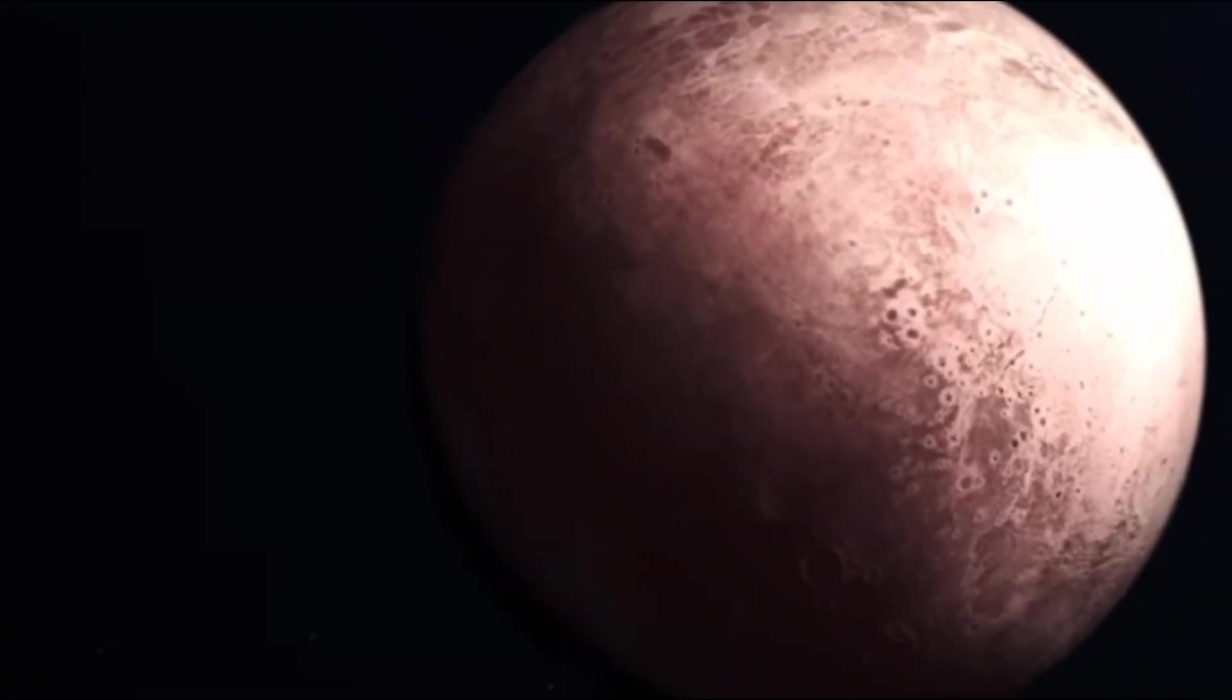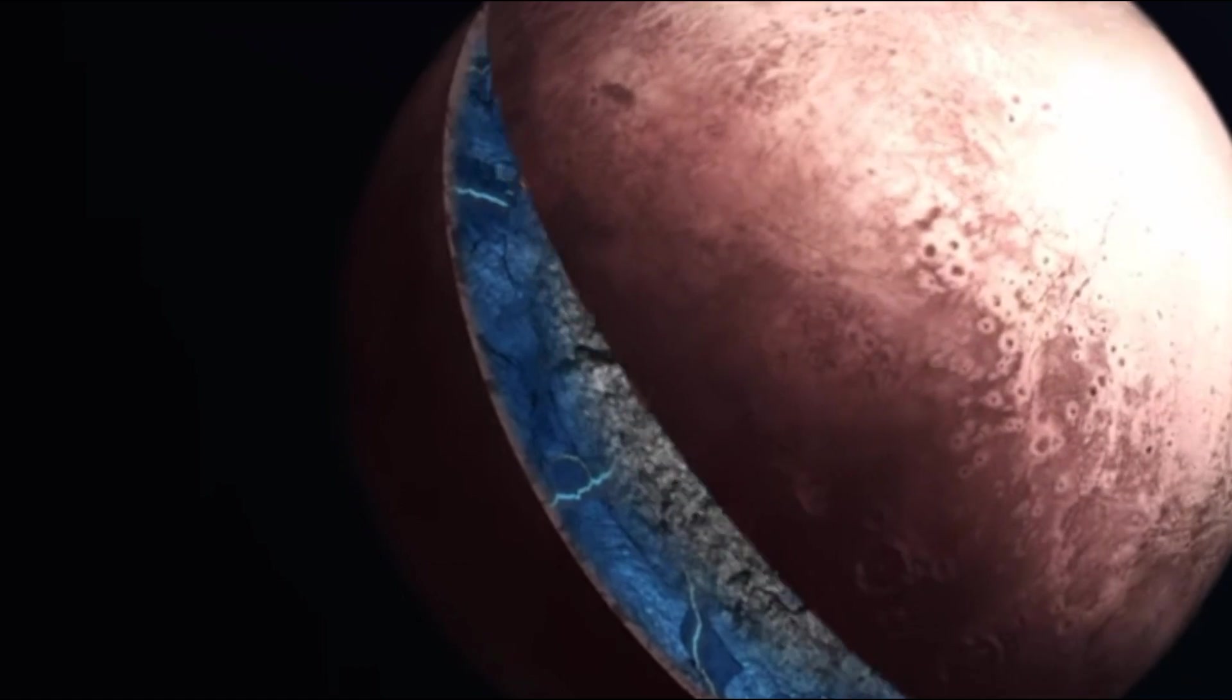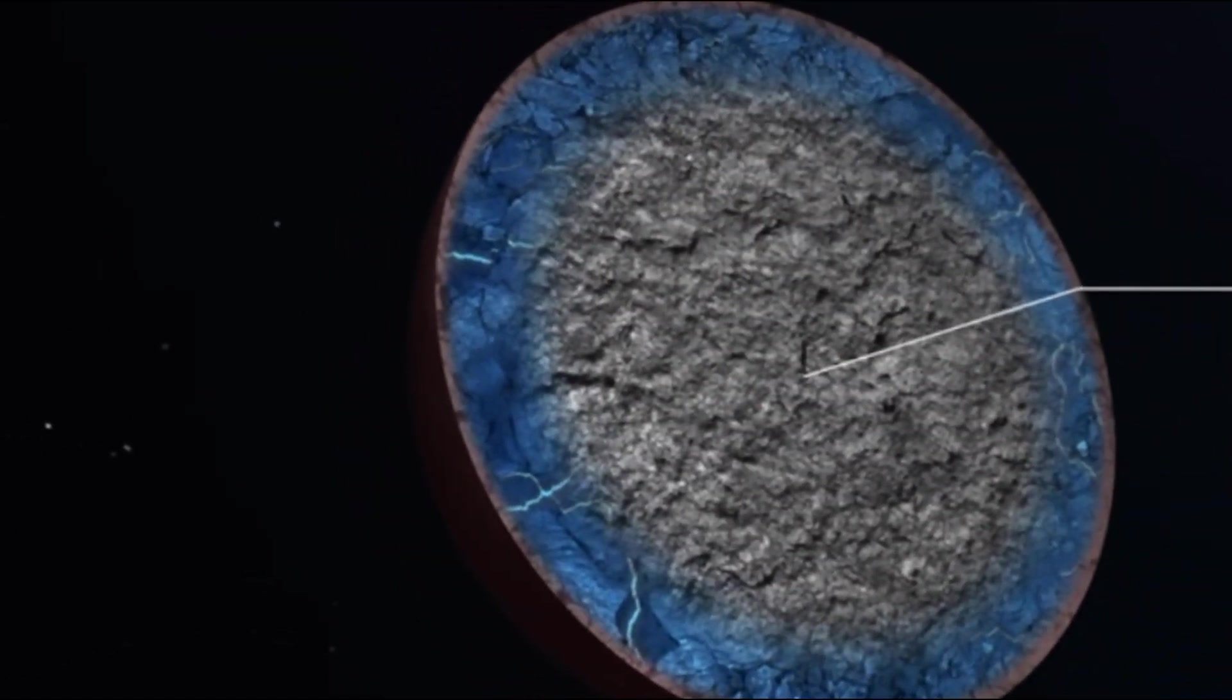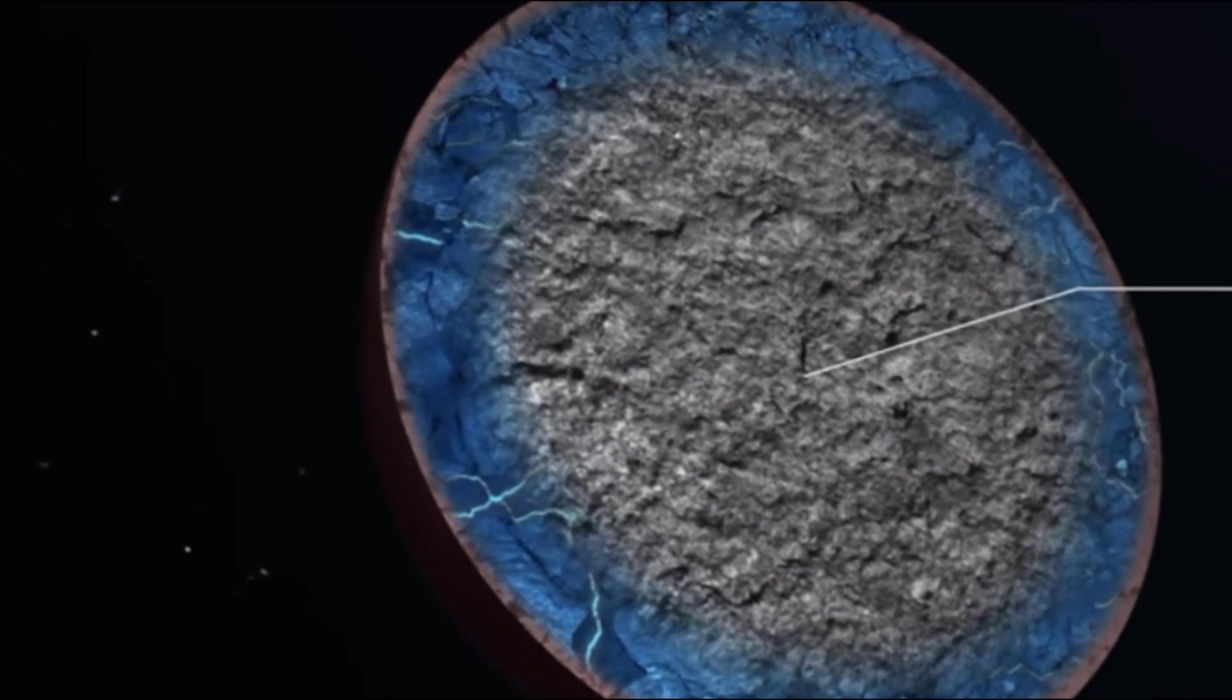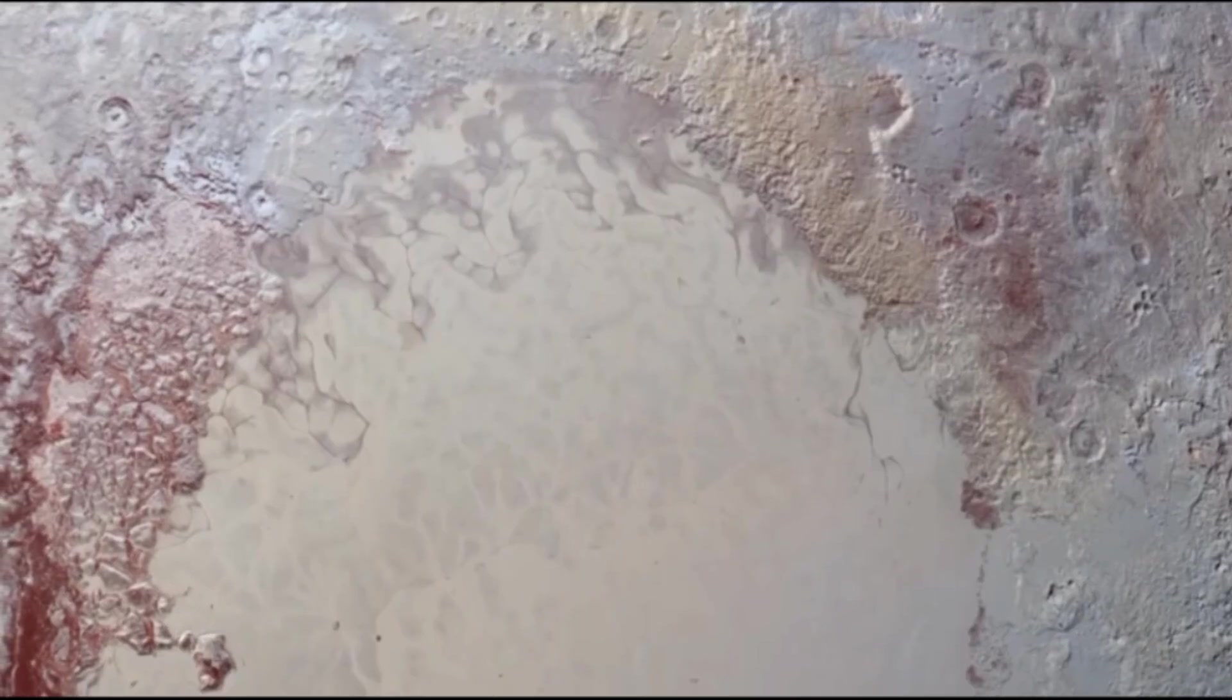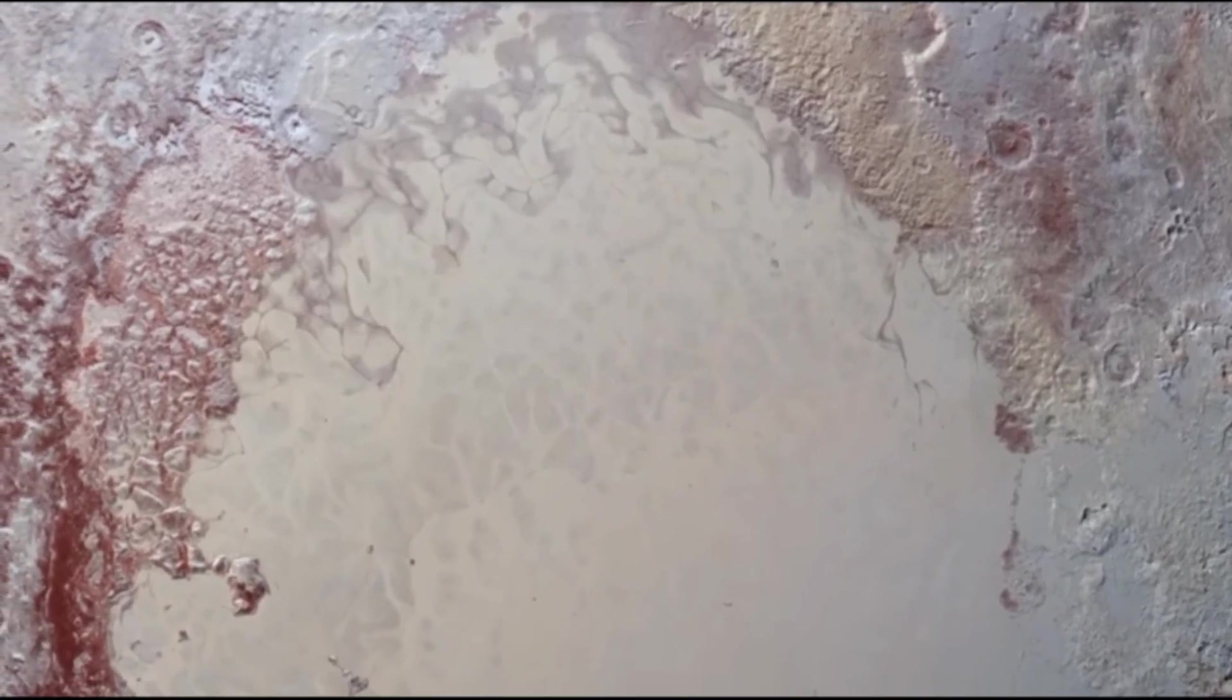The internal structure of Pluto consists of a rocky core surrounded by a mantle of water ice. If there was radioactive decay in the core, it could provide enough energy for the existence of a liquid mantle, suggesting the possibility of a subsurface ocean in the past. Freezing of this ocean could have led to the formation of Pluto's characteristic surface relief, with grabens and scarps.